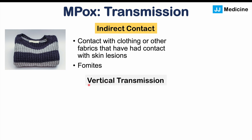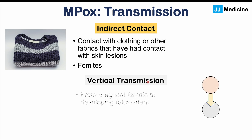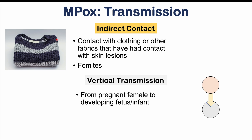Vertical transmission is also possible — from a pregnant female to the developing fetus or infant, as the virus can cross the placental barrier. All these transmission routes exist because the virus is present at high concentrations in the fluid from skin lesions as well as in bodily fluids including saliva, blood, vaginal fluid, and semen.